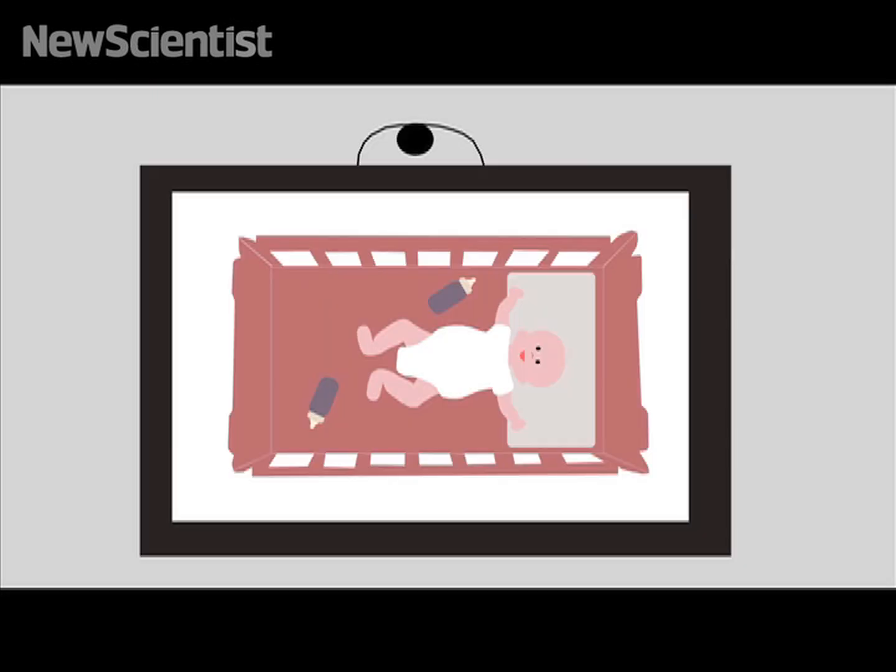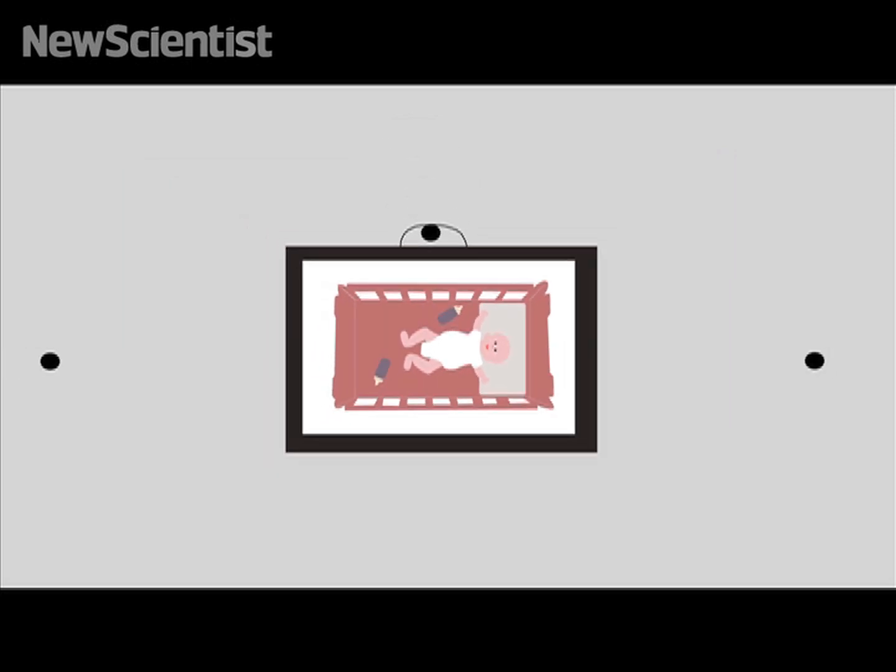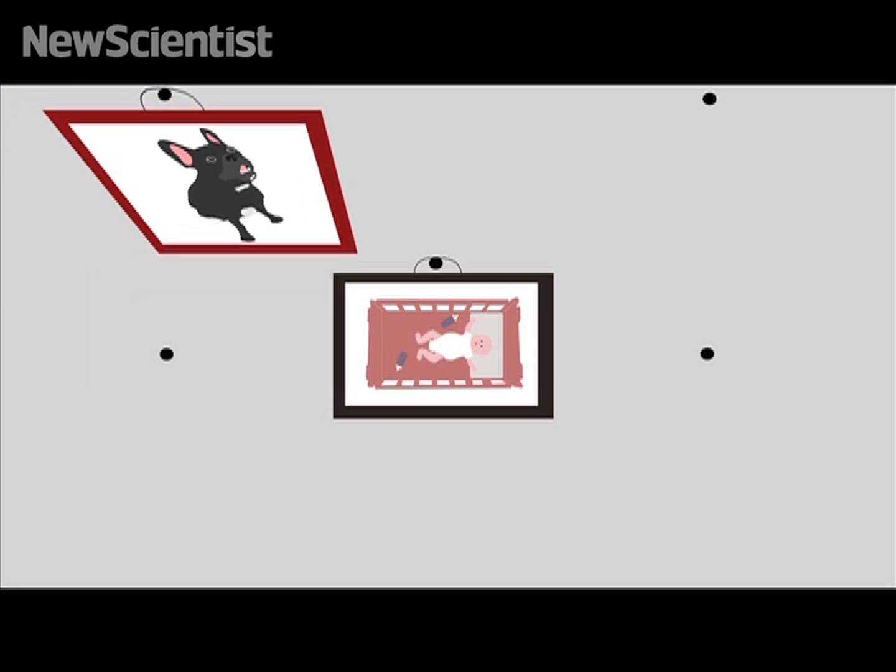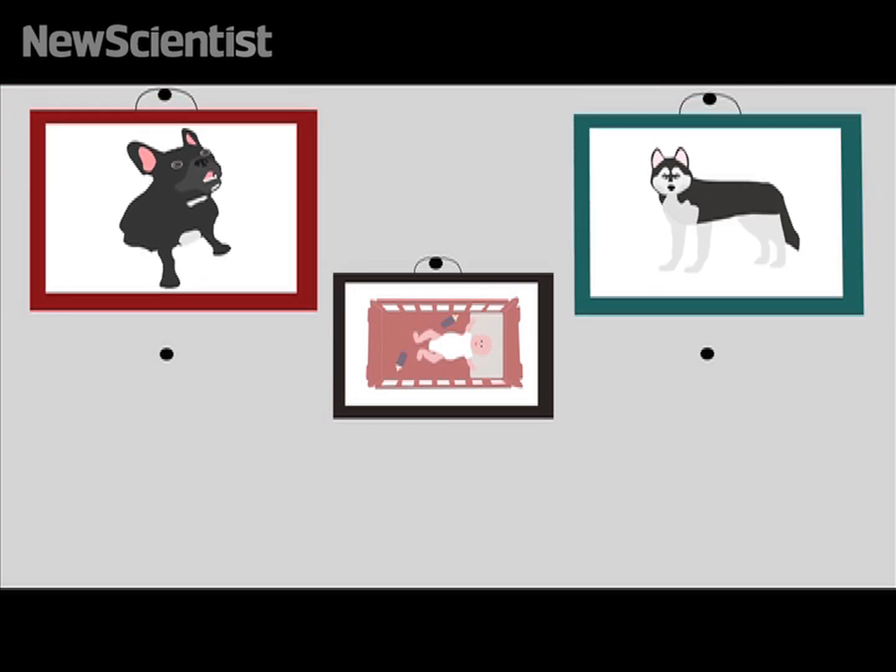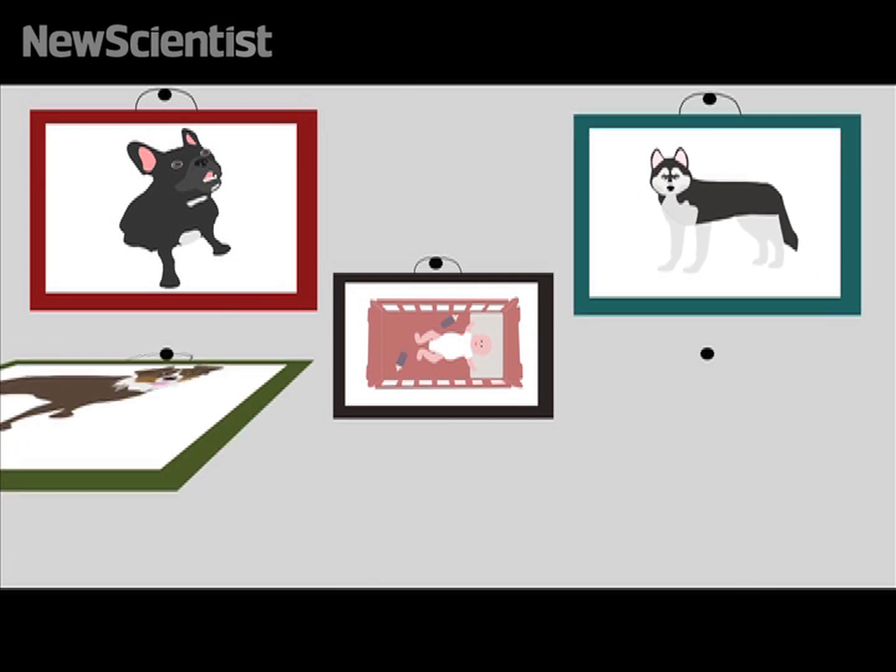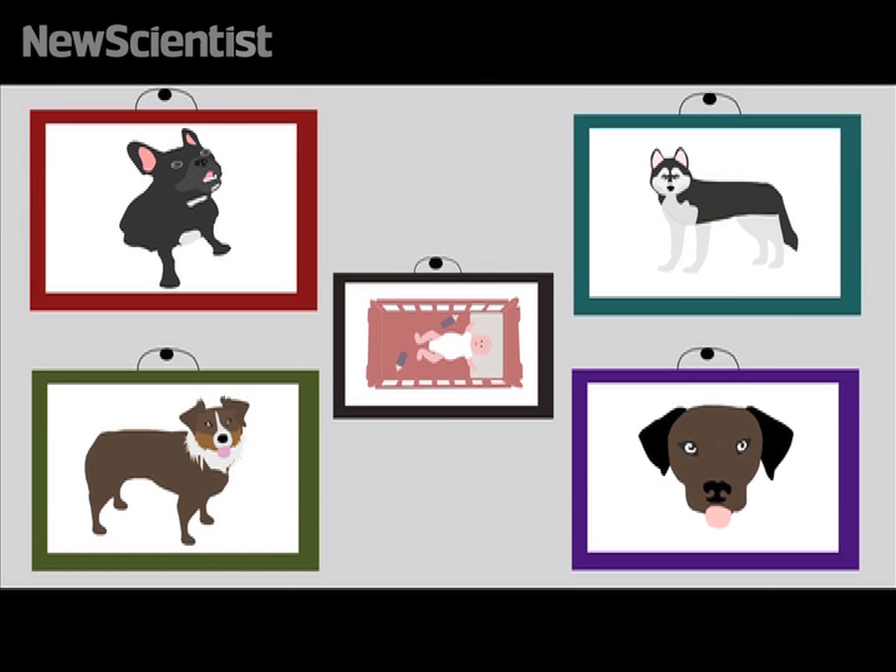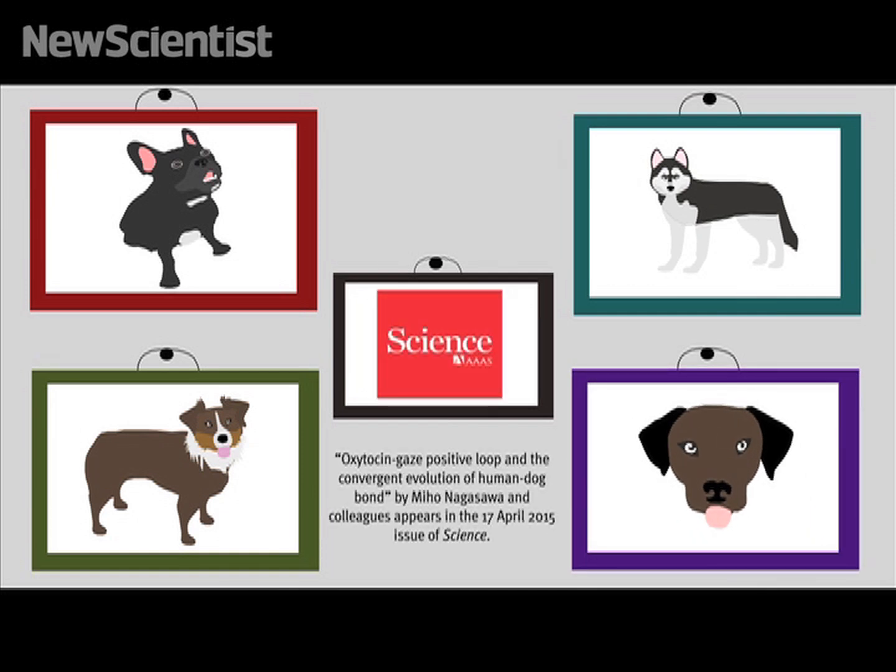The self-perpetuating oxytocin loop appears to strengthen interspecies bonding in a similar way as human mothers and their infants, which means that humans might feel affection for their dogs like they do towards family members, and that eye contact can bring these species closer. It seems that dogs may have co-opted this neural system to strengthen social attachment, and since wolves are different in this respect, it probably happened during the animal's domestication.